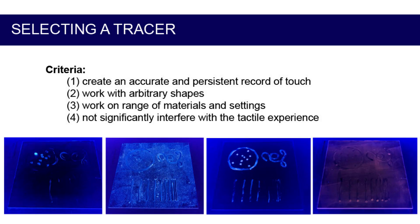The first step in our process was selecting a tracer and an application method that would meet our criteria. During our testing, we explored a range of UV fluorescent materials such as gels, powders, and inks for documenting traces, as seen in the images on this slide. We also tried two different approaches to tracking touch.